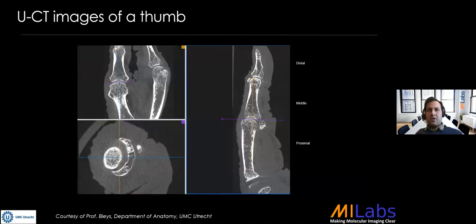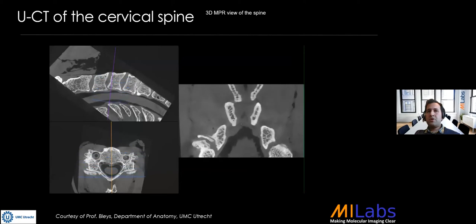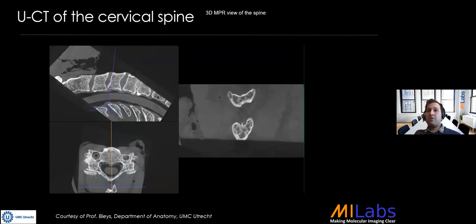Coming back to direct applications for orthopedics, here is an example of a human ex vivo sample — this is a thumb. We can see the different bones, the spacing between the bones, the trabecular structure, and the cortical bone. This is a nice example showing that we can not only analyze the cortical bone but also do very accurate analysis on the trabecular region. The same is true when looking at the cervical spine — we can look at the trabecular structure, individual vertebral bodies, and the intervertebral disc. This makes for a very nice multifaceted application for several orthopedic cases.